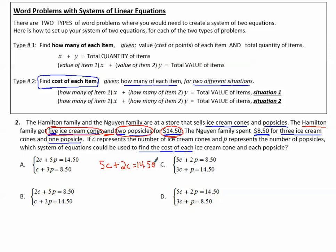So let's begin to look for that. I see 5C and 2P. 5C and 2P, and it needs to equal $14.50. So far, it looks like this is the only one that does it. This has the numbers in the incorrect places. But let's keep reading.